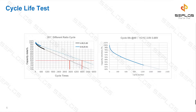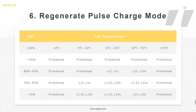Some people may say only our cells have these limitations, but no — all cells have these limitations. Many factories do not provide these details in their data sheet, but we have spent more than six months of testing to gather all these details. We want more people to understand LFP batteries, reduce the risk of battery packs, and extend battery pack cycle life.